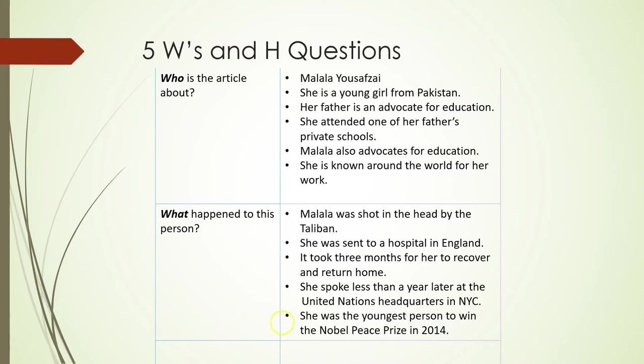What happened to this person? Malala was shot in the head by the Taliban. She was sent to a hospital in England, and it took three months for her to recover and return home. And yet she spoke less than a year later at the United Nations Headquarters in New York City. She was also the youngest person to win the Nobel Peace Prize. All these details contribute to what happened to her.